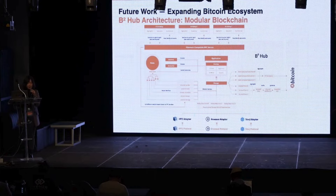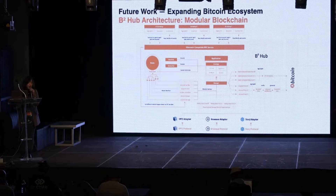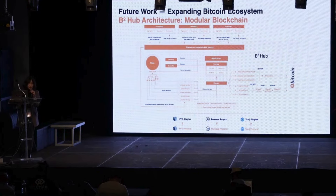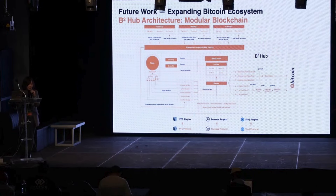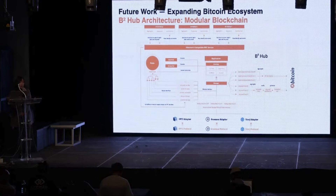B-squared Hub adopts a modular design — one of the most innovative parts of our solution launching in Q2 this year. We will allow different ZK rollups built using Polygon ZK EVM or Polygon CDK to connect to Ethereum-compatible RPC services. Rollup data will be stored in various decentralized storage protocols, ZK proofs will be verified within B-squared Hub completing the initial transaction confirmation, and proof data from different ZK rollups will be aggregated and submitted to Bitcoin. Users can complete final state transition verification through the B-squared chain platform. If you are considering building your own Layer 2 solution for the Bitcoin ecosystem, consider building your own chain using B-squared Hub.